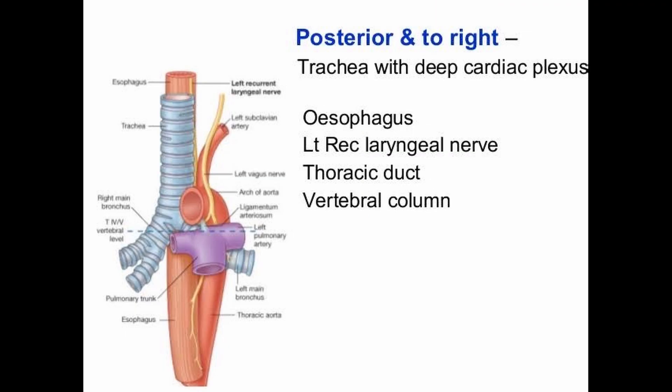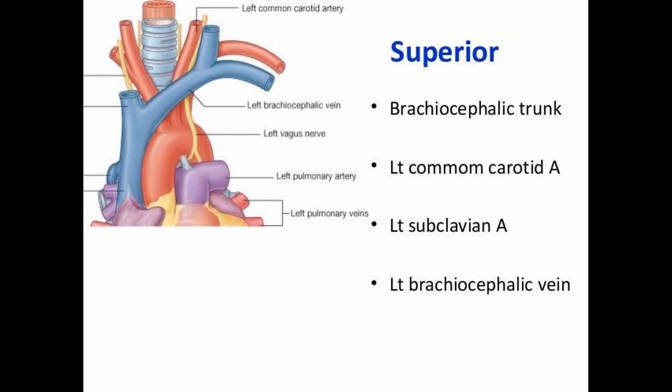The second is posterior and to the right relations: the deep cardiac plexus, esophagus, left recurrent laryngeal nerve, thoracic duct, and the vertebral column. These are the posterior and to the right relations of the arch of aorta, as you can see on the diagram.